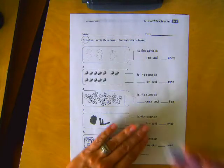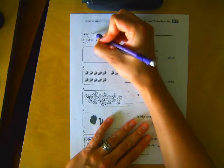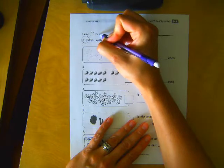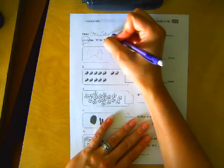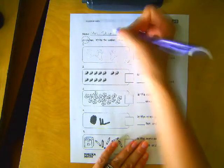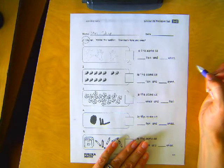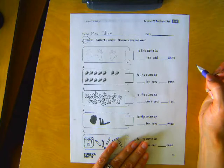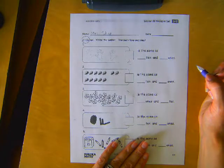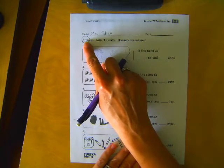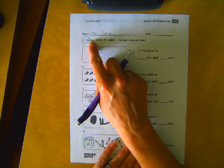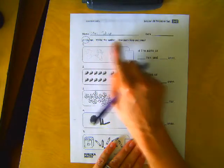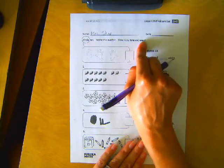Name on your paper, first thing. Okay, let's read those directions. Circle ten, write the number. How many tens and ones?